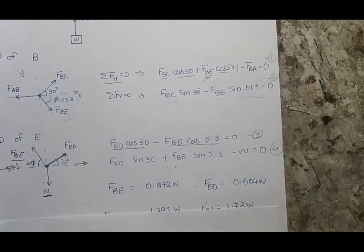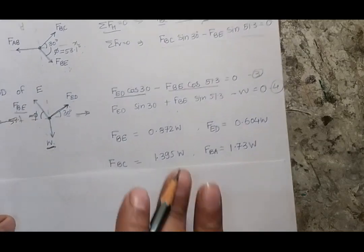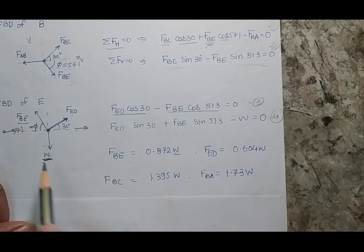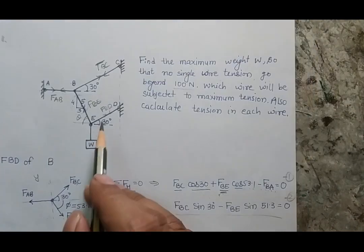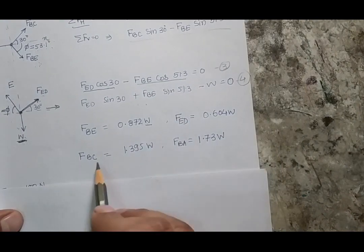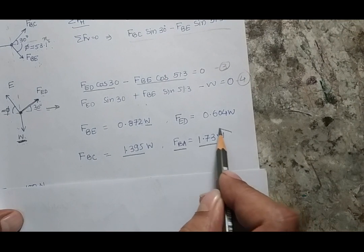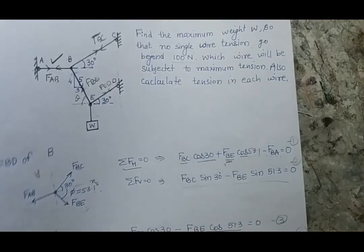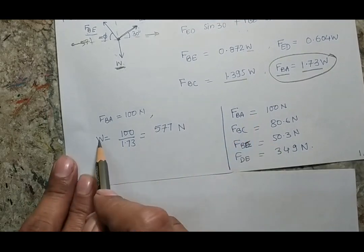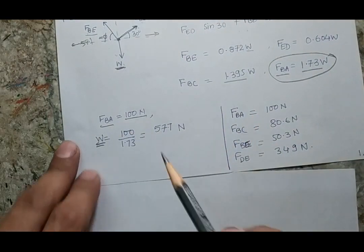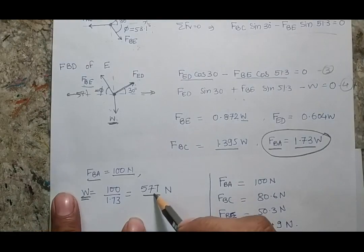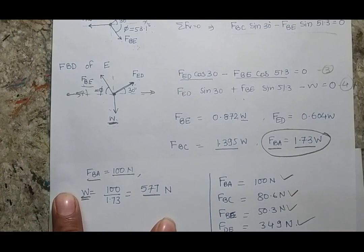Solving the four equations, all forces come out as multiples of W: F_BE = 0.873W, F_BC = 1.394W, and F_BA = 1.73W. Since F_BA has the highest coefficient, wire BA carries the maximum tension. Setting F_BA = 100 newtons (the maximum allowable), we solve for W: W = 57.7 newtons. Substituting back gives all four wire tension values.